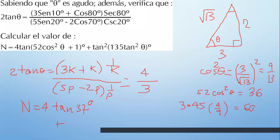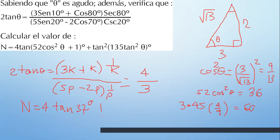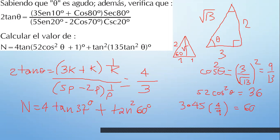¿Qué pasa si no te ponían grados? Cuando no te ponen grados ni centesimales, no puedes pensar más que en radianes. Si no te dan una unidad, es radianes. No te olvides de eso. Entonces, tangente de 37 más tangente cuadrado de 60. Tangente de 60: recuerda el equilátero. Tienes 60, tienes 2, la mitad es 1. Opuesto raíz de 3, tangente de 60 es raíz de 3. Elevado al cuadrado es 3.